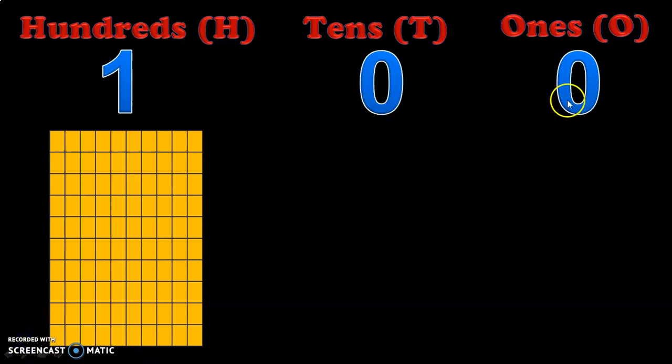Since the tens and ones digits are zero, they do not have any value to represent visually. However, zero is a very important concept and it will be dealt with in a separate video.